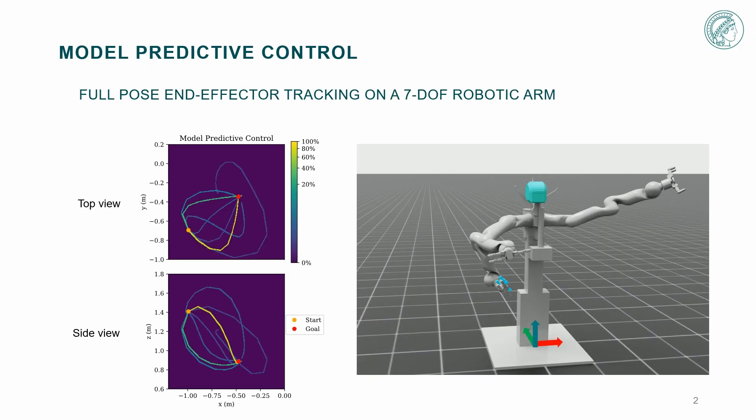As an example, we control a 7-degree-of-freedom robotic arm by commanding joint velocities for high-speed tracking of the end-effector's full pose. The MPC solutions in this task can be multimodal due to both the redundant degree of freedom and the numerical solver finding different local minima.